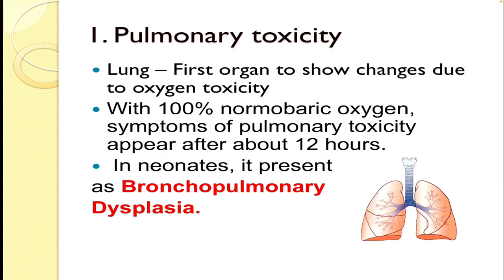Pulmonary toxicity: the lung is the first organ to show changes due to oxygen toxicity. The toxicity is due to alveolar concentration rather than arterial concentration. With 100% normobaric oxygen, symptoms of pulmonary toxicity appear after about 2 hours. In neonates, it presents as bronchopulmonary dysplasia.